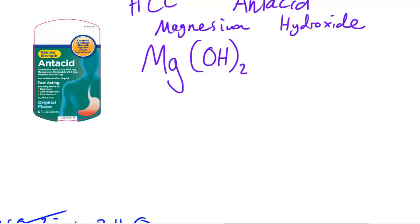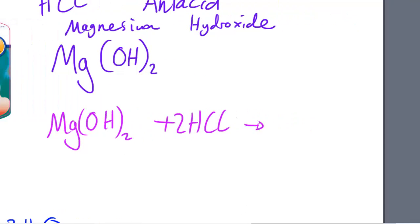What would happen is the magnesium hydroxide would react with HCl, and it would be 2 moles of HCl probably. And that would produce the MgCl2 and it would produce H2O.